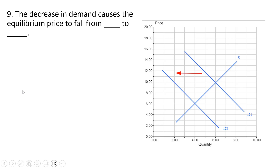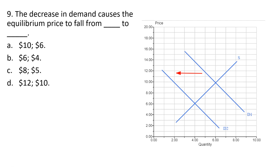Question 9. The decrease in demand causes equilibrium price to fall from blank to blank. Before the decrease in demand, the equilibrium price is at $10, where demand intersects supply. At our new demand curve D2, where demand intersects supply, that occurs at a price of $6. So answer choice A is correct.